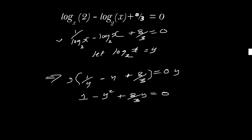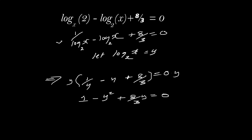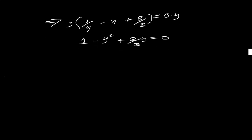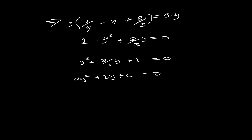That is now a quadratic equation. Rearrange it into standard form, starting with the term with the highest exponent: minus Y squared, followed by plus eight over three Y, followed by positive one equals zero. A standard quadratic equation is aY squared plus bY plus c equals zero.